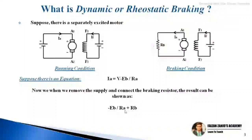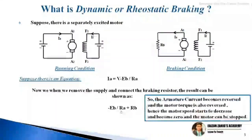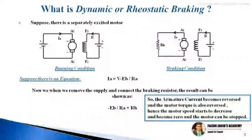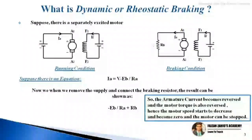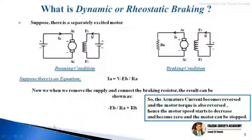This means the armature current becomes reversed and the motor torque is also reversed. Hence the motor speed starts to decrease and becomes zero, and the motor can be stopped. This is how the dynamic or rheostatic braking system operates.